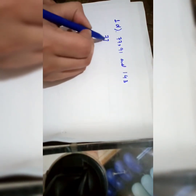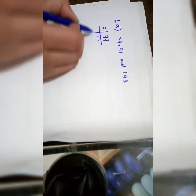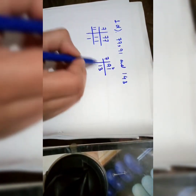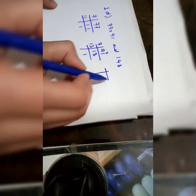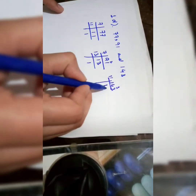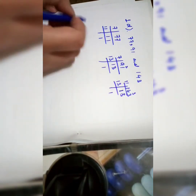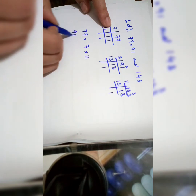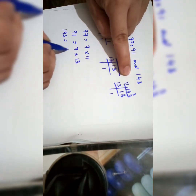Now Part D: find the HCF of 77, 91, and 143. First make the factors of 77: 7 elevens are 77, so factors are 7 and 11. Factors of 91: 7 thirteens are 91, so factors are 7 and 13. Factors of 143: 11 thirteens are 143, so factors are 11 and 13. Write down: 77 equals 7 multiplied by 11; 91 equals 7 multiplied by 13; 143 equals 11 multiplied by 13.